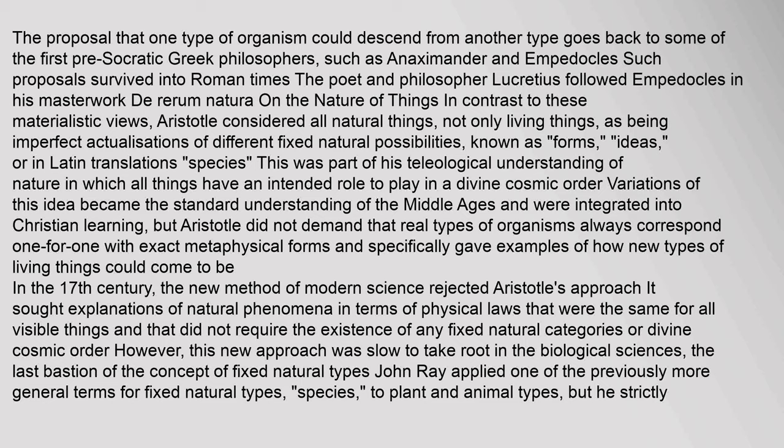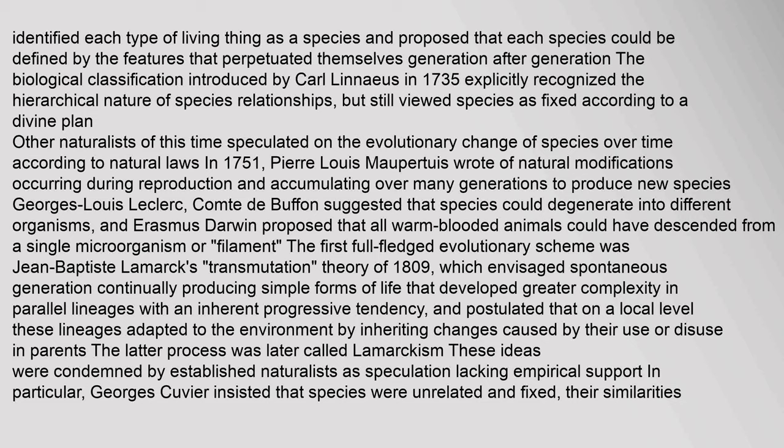However, this new approach was slow to take root in the biological sciences. John Ray applied the term species to plant and animal types, proposing that each species could be defined by features that perpetuated themselves generation after generation. The biological classification introduced by Carl Linnaeus in 1735 explicitly recognized the hierarchical nature of species relationships but still viewed species as fixed according to a divine plan.